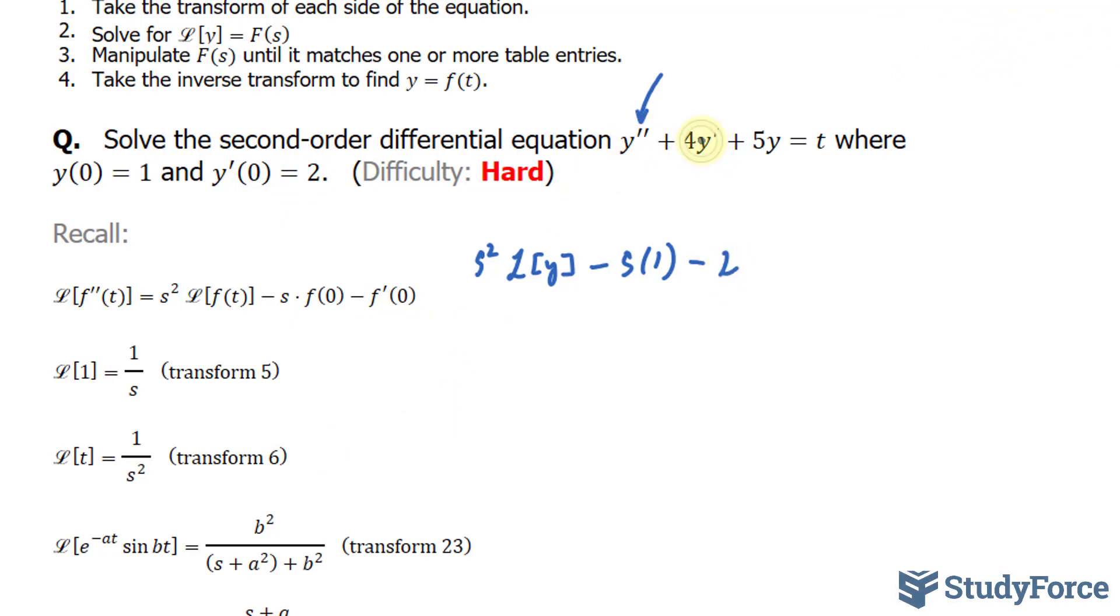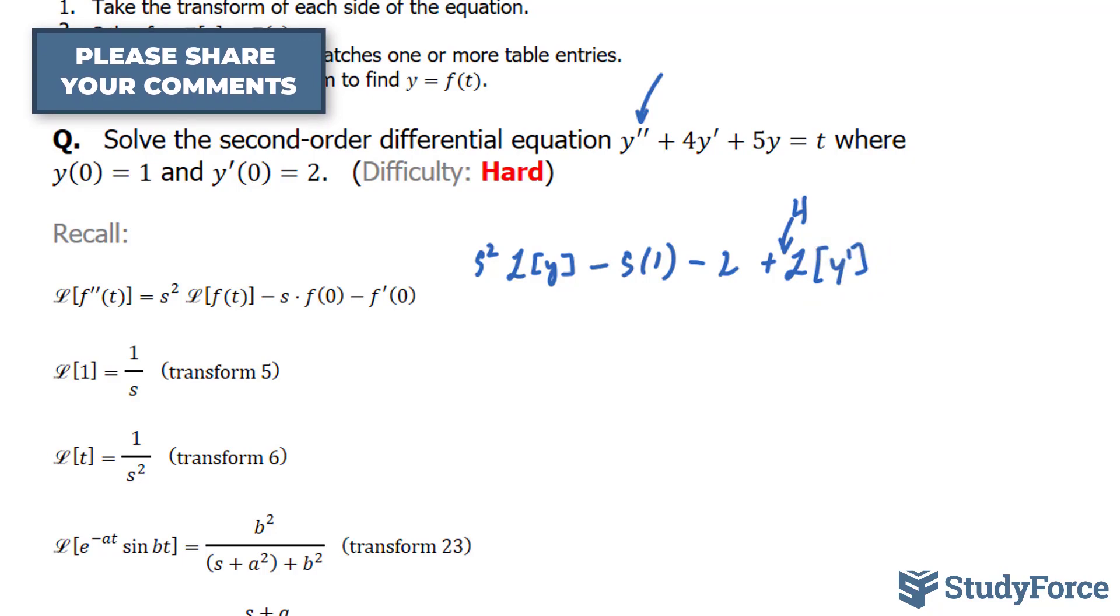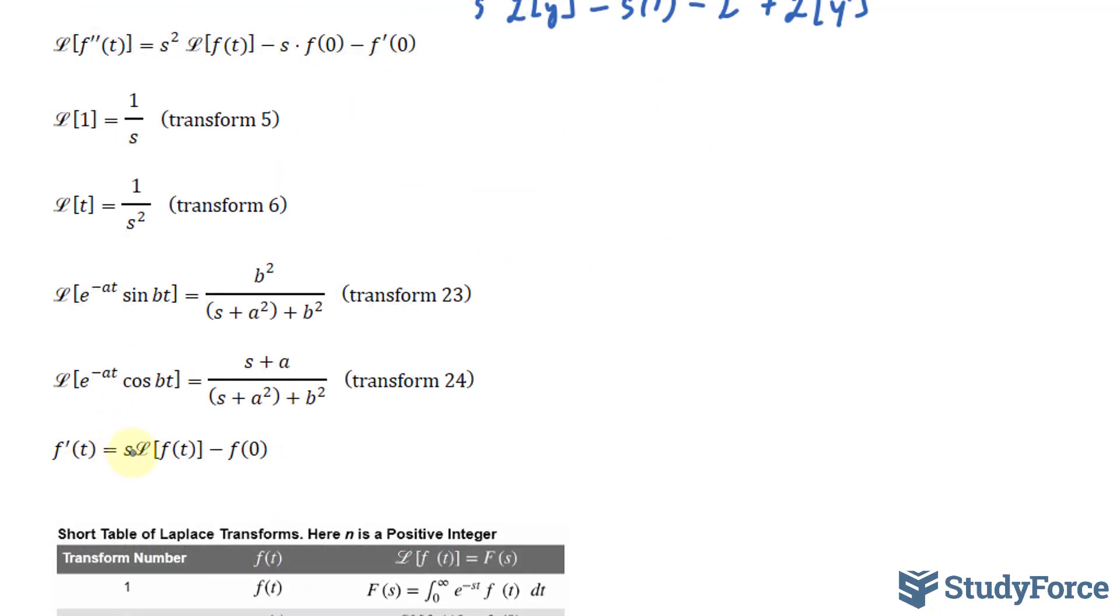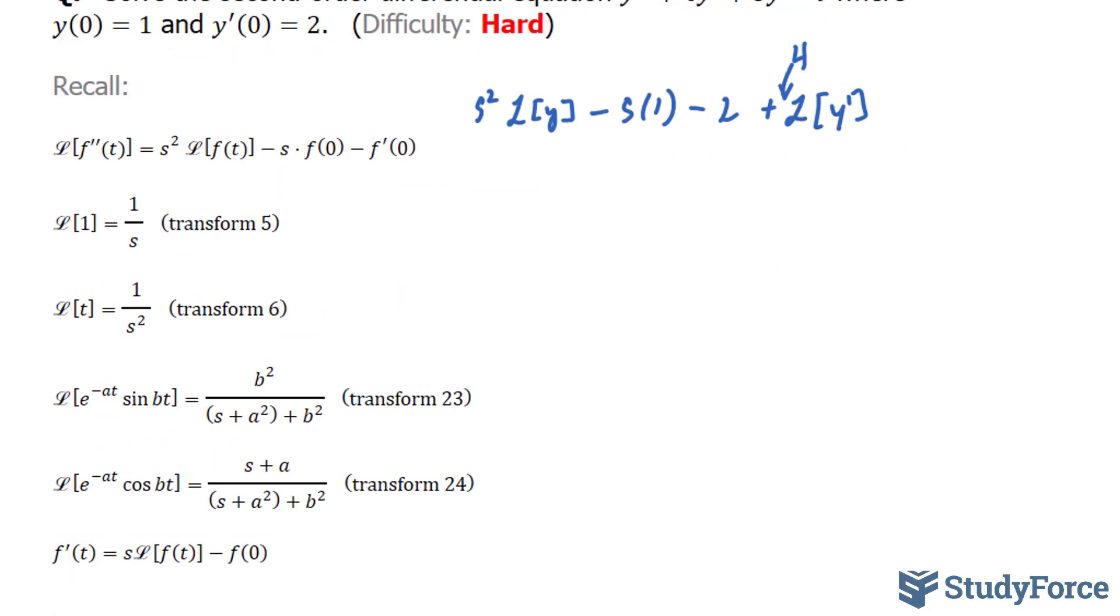We've just finished off the first term, now onto the next. Plus the Laplace transform of 4 times y'. I'll write down the 4 out here, and over here I'll write down y'. We know that the Laplace transform of a first derivative is equal to what you see on your screen here, which is equal to s times the Laplace transform of y minus y(0), which is 1.